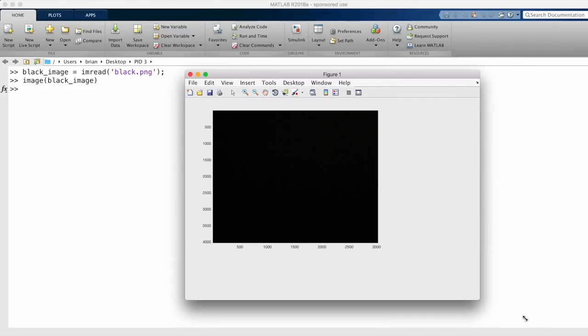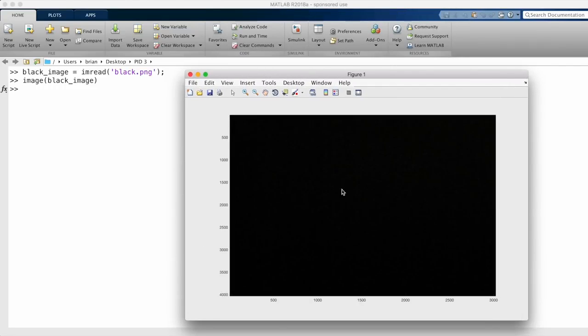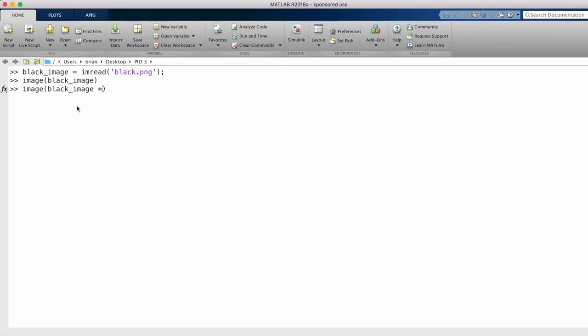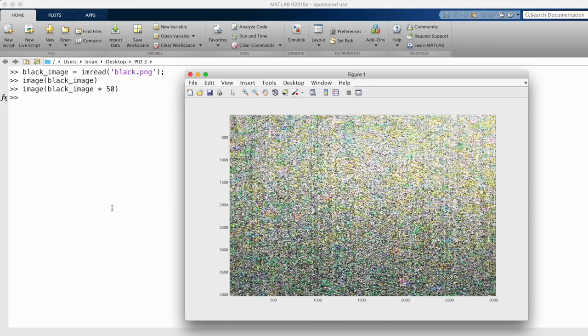At first glance the image looks like a perfectly black picture, but there are slight variations in those dark pixels. We can confirm that by making the image brighter by multiplying each pixel value by 50. And you can see that it's obvious that there's some low amplitude random noise throughout this image.